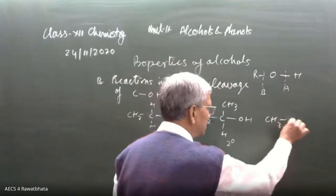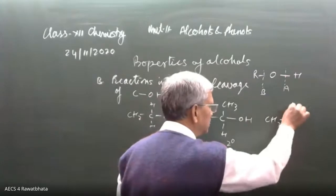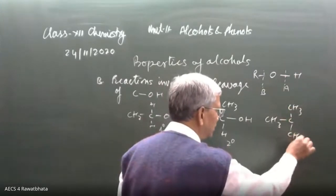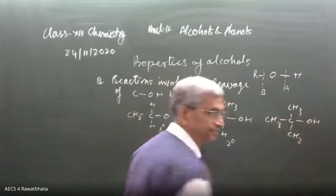And then CH₃C(CH₃)₂OH — here there are three CH₃ groups — this is a 3° alcohol.